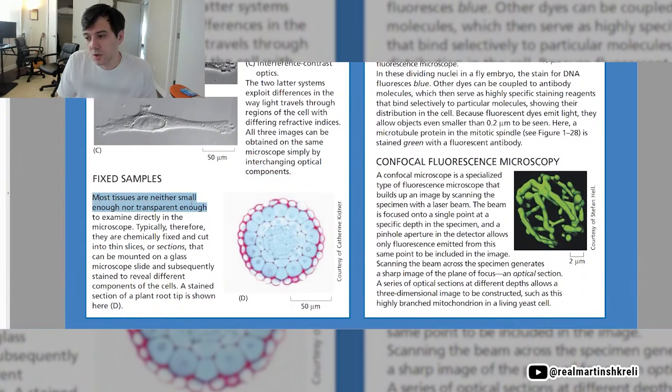Fixed samples. Most tissues are neither small enough nor transparent enough to examine directly in the microscope. Therefore, they're chemically fixed and cut into thin slices or sections that can be mounted on a glass microscope slide and subsequently stained to reveal different components of the cells. A stained section of a plant root tip is shown here.